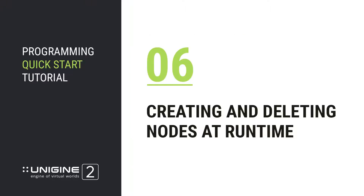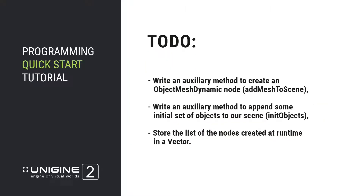Now let us dive in and start developing our first C++ project for Unigine. In our project we're going to need some objects. So let us write an auxiliary method to create an object mesh dynamic node and call it addMeshToScene. We'll write another auxiliary method to append some initial set of objects to our scene called initObjects. We are also going to store the list of nodes created at runtime in a vector.